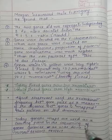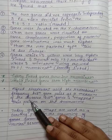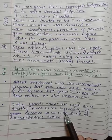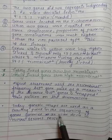Alfred Sturtevant used the recombination frequency between gene pairs as a measure of the distance between the genes and mapped their positions on the chromosome. Today, genetic maps are used as a starting point in the sequencing of genomes, as was done in the Human Genome Project.